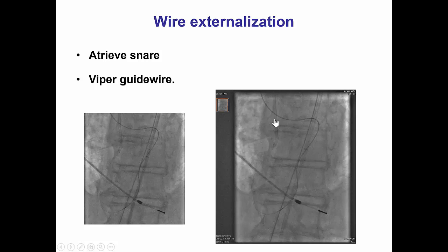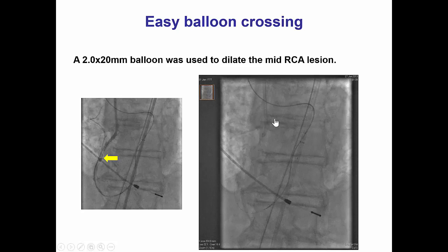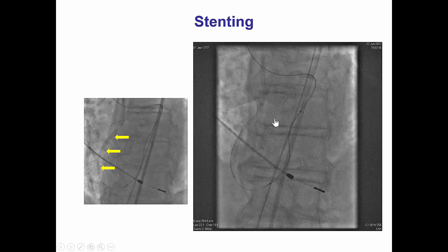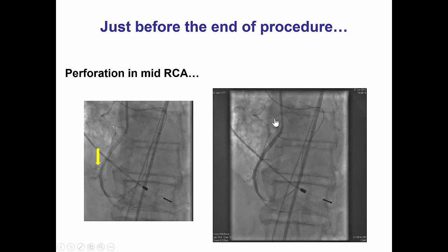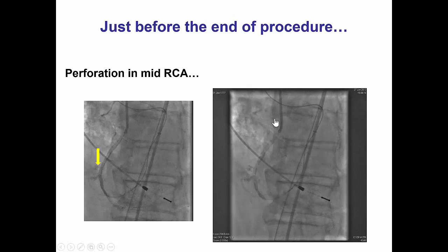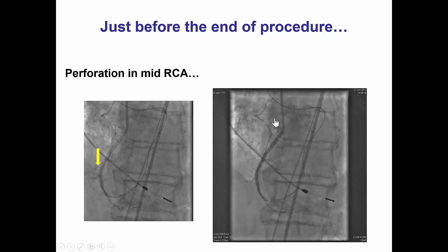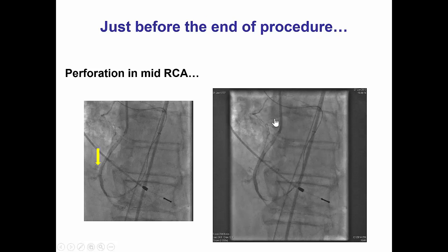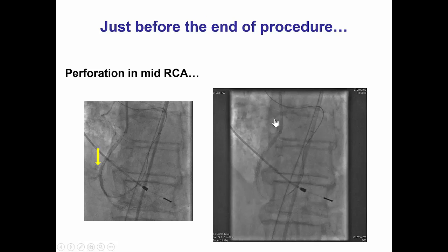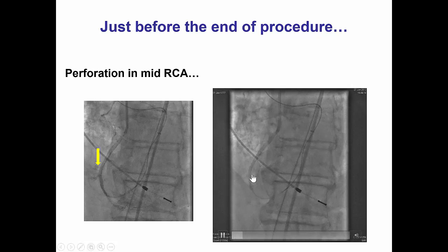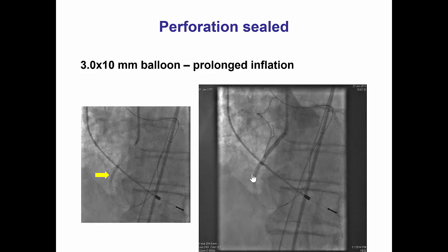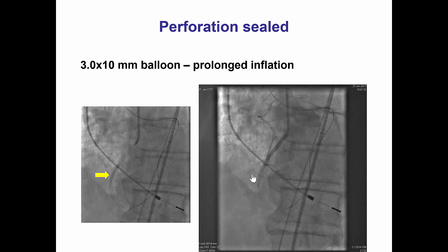The wire was externalized, and then the right coronary was predilated. There was extensive dissection, followed by placement of drug-eluting stents. We post-dilated the drug-eluting stents with a non-compliant balloon, and we did have some staining around the stents suggesting a small perforation. However, this resolved after prolonged balloon inflation with a 3 mm balloon.